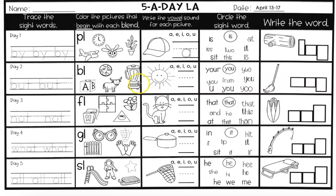This is coloring the pictures that begin with the blend B-L. We have block, globe, ox, blender. Two of those start with B-L — block and blender. Circle the two that start with B-L.